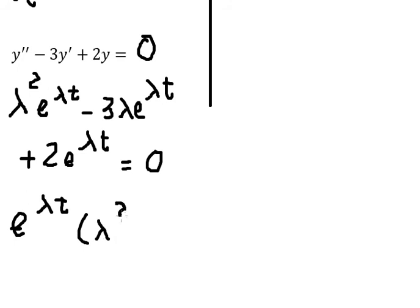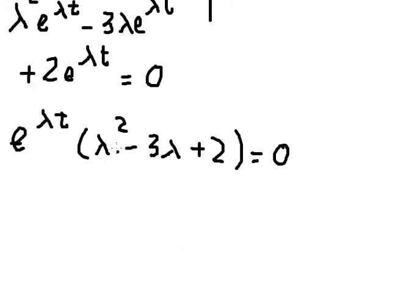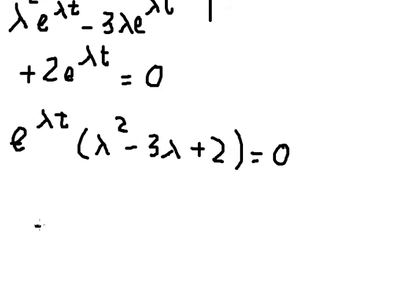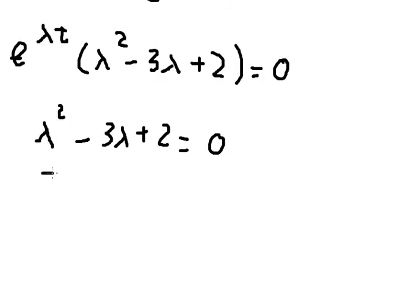After factoring, we get λ² − 3λ + 2 = 0. Factoring this as (λ − 2)(λ − 1) = 0 gives us two solutions: λ = 2 and λ = 1.